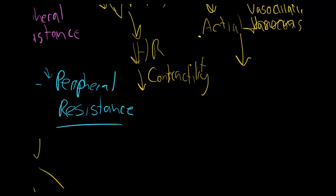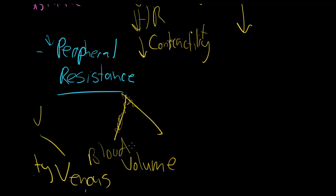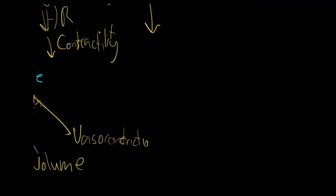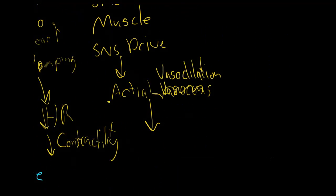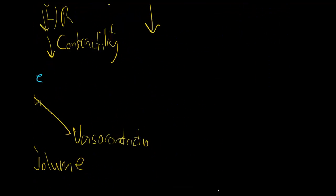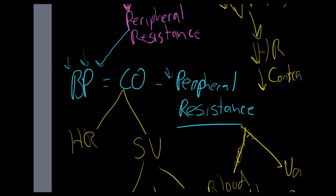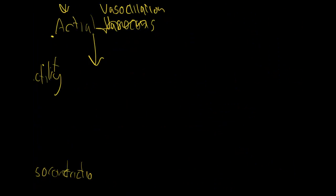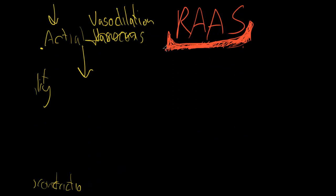So what does that do? That decreases your peripheral resistance. It is governed by blood volume and vasoconstriction. So if we decrease that, we decrease your peripheral resistance, decrease blood pressure, decrease morbidity and mortality.